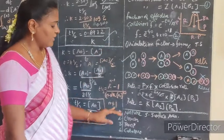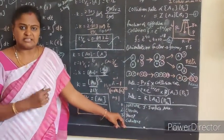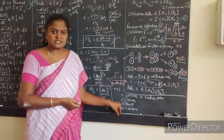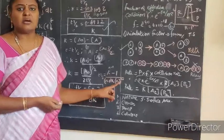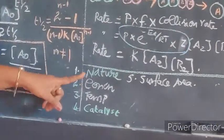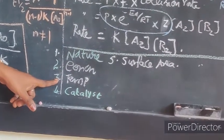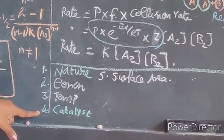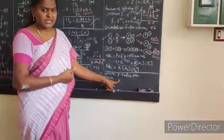The last point to discuss is the factors affecting the rate constant. There are totally 5 factors which affect the rate constant, as discussed in our book. Number 1: nature or state of the reactant. Number 2: concentration of the reactant. Number 3: temperature. Number 4: catalyst used in the reaction. Number 5: surface area of the reactant.